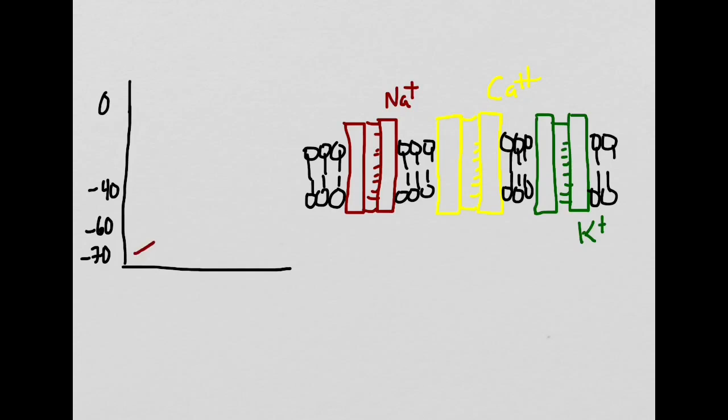The resting membrane potential of a pacemaker cell is always creeping up to be positive because there are leaky, funny sodium channels, and this is called a funny current.